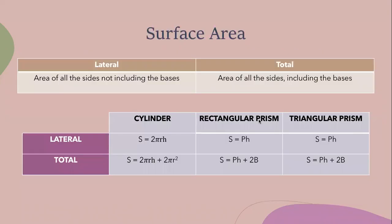There are two types of surface area - lateral and total. Lateral surface area is the area of all the sides not including the bases. For a cylinder here's your formulas for lateral and total surface area. Rectangular prism, here's your formulas. Triangular prism, here's your formulas. Another great thing to screenshot. Beautiful information.